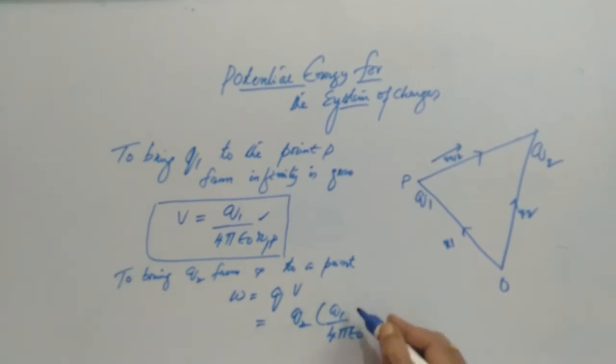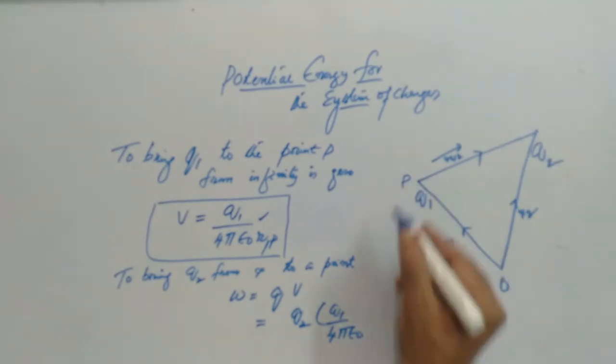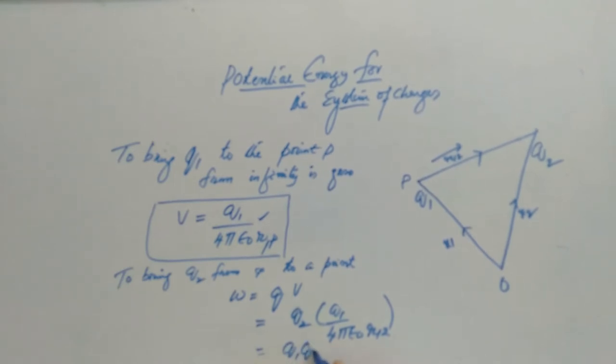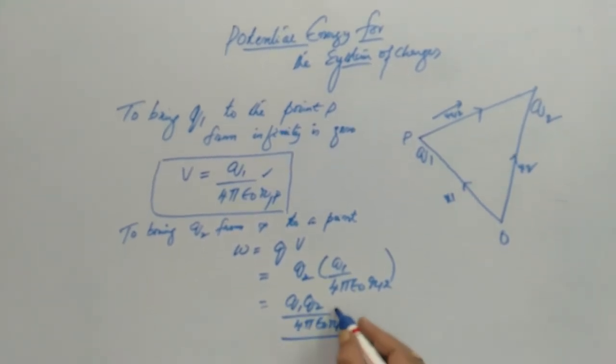Where do you want to put the charge Q2 with respect to Q1? The vector says R12. So the final answer will be Q1 Q2 by 4π epsilon naught R12. So this is our final answer.